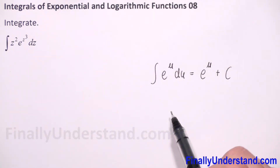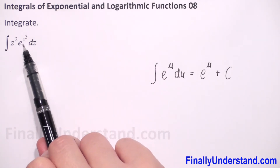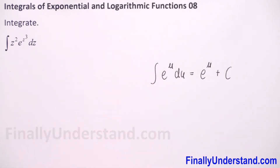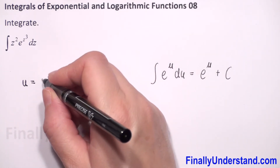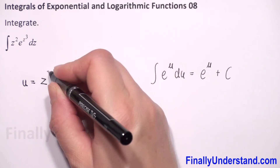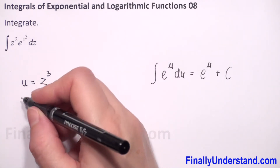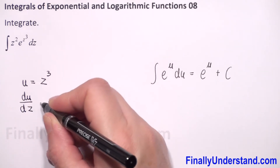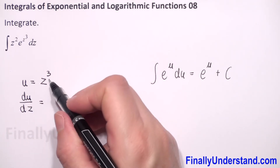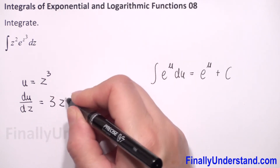In our example, u is equal to z cubed. Now we have to find the derivative of both sides with respect to z, so du/dz is equal to 3z squared.